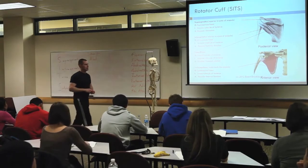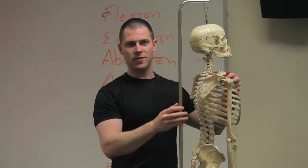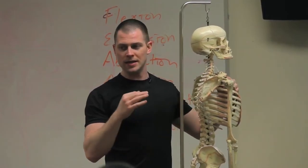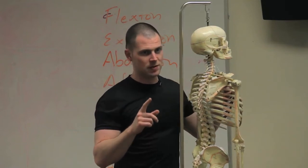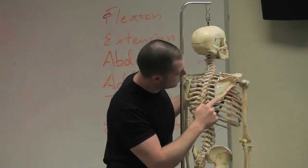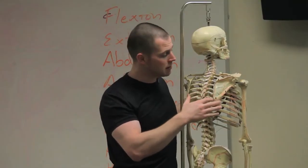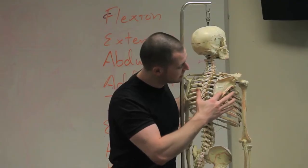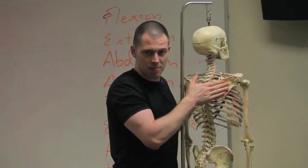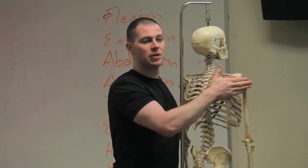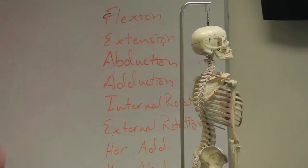Infraspinatus is in the infraspinous fossa. What was the fossa again? An indentation. Infra probably sounds like inferior. Spine. So this infraspinous fossa is all this area here. The infraspinatus goes from the back of the scapula to the back of the humerus. What's it going to contribute to? External rotation.